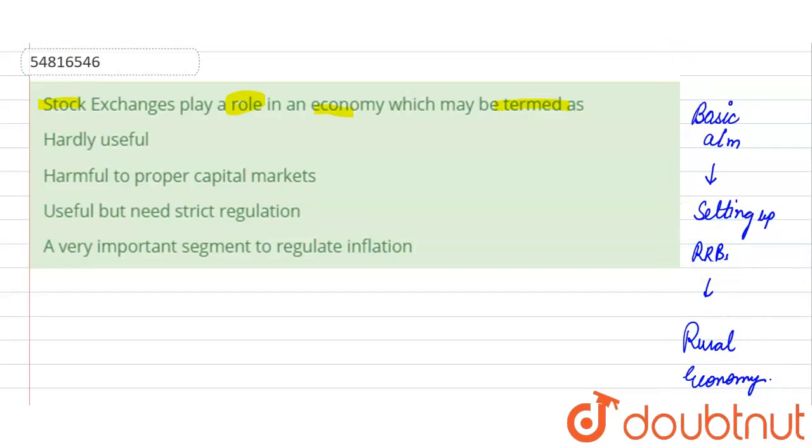The first says hardly useful. Aisa kuch bhi hai ki woh hardly useful hai. The second it would be harmful to proper capital markets. Harmful to proper capital markets aisa kuch bhi nahi ki woh harmful hai.